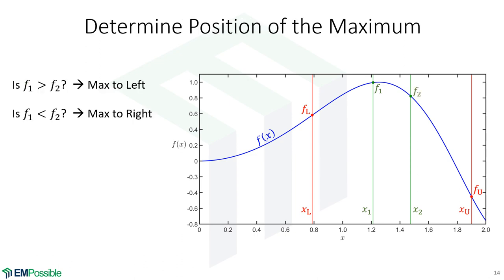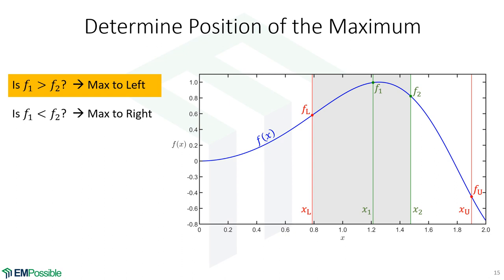Now we decide where within this new span the extremum is. In this case f1 is greater than f2, so the maximum has to be to the left. If f1 were less than f2, the extremum would be to the right — but that's not the case here. Our extremum is to the left, so we highlight that region and want to adjust our interval to this new highlighted gray region.